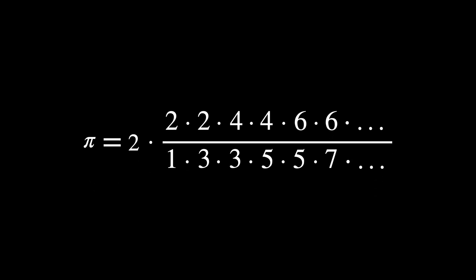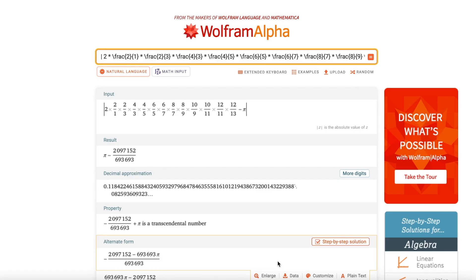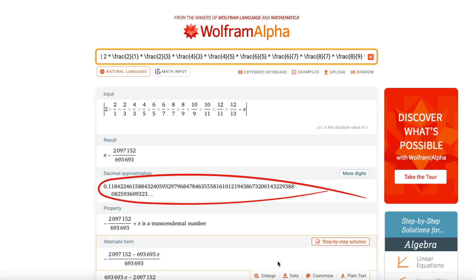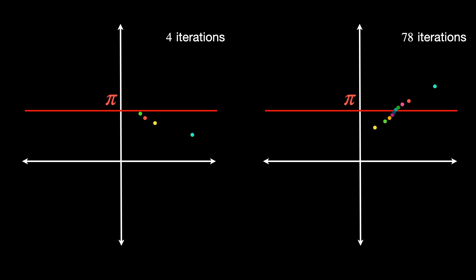Now here is where things get interesting. If we try the same with the second formula — the Wallis product — we see very quickly how inefficient it is. I computed as many iterations as I could, but WolframAlpha has a character limit, so we had to stop at iteration 12, and the error was still way greater than what we achieved with the first formula in just four iterations. After researching online, I found that it would take around 78 iterations of the Wallis formula to reach an accuracy of 10 to the minus 2 — the same accuracy achieved by Viète's formula in just four iterations.